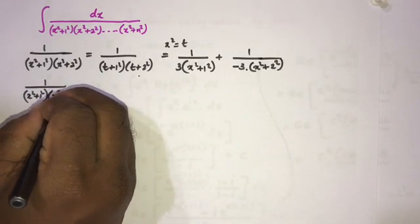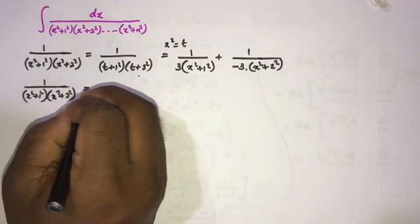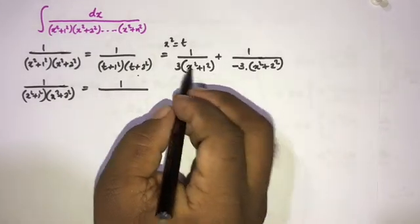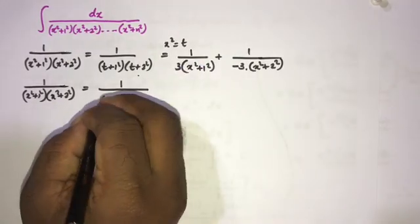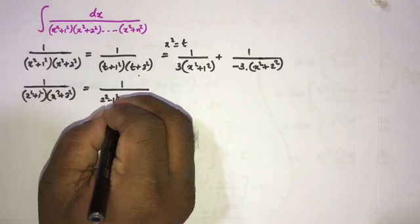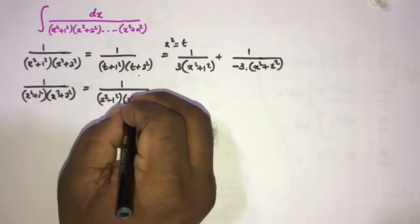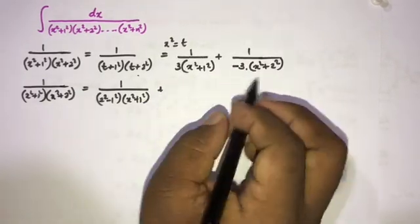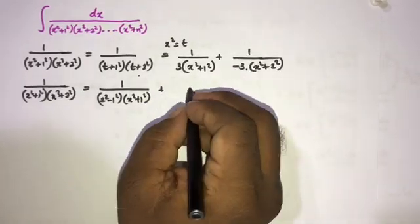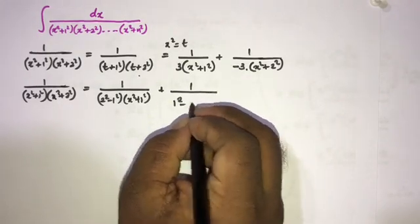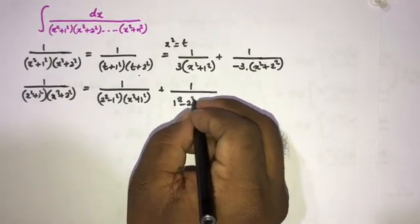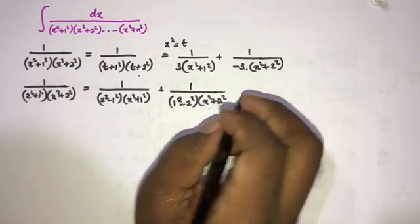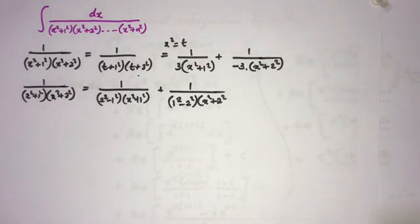So we can rewrite 1 over (x²+1²)(x²+2²) as: 1 over (2²-1²)(x²+1²) plus 1 over (1²-2²)(x²+2²), replacing the constants 3 and -3 with (2²-1²) and (1²-2²) respectively.